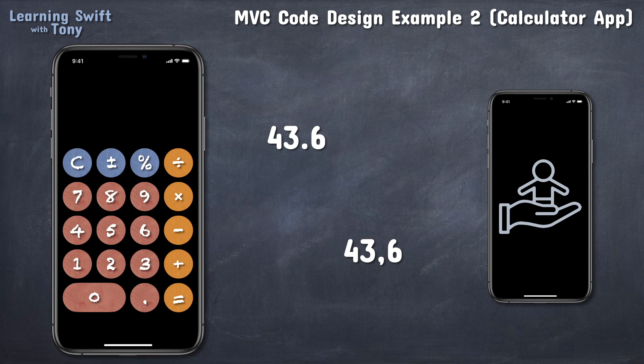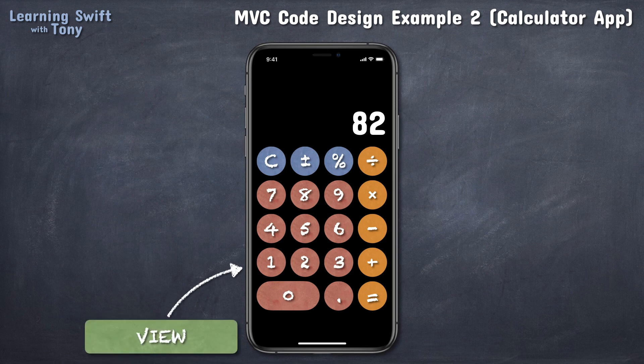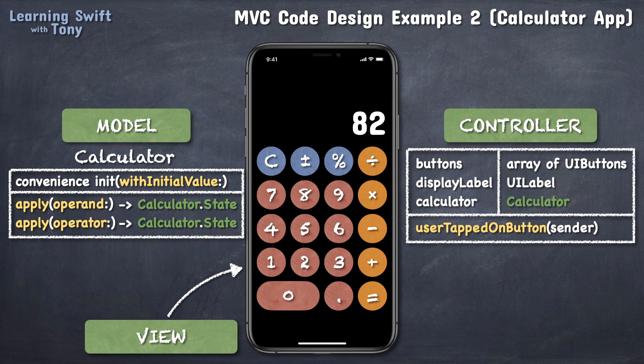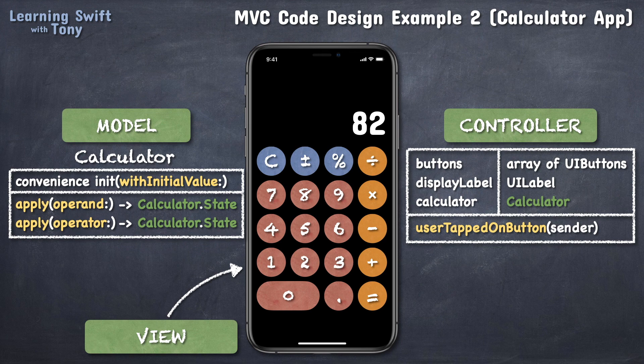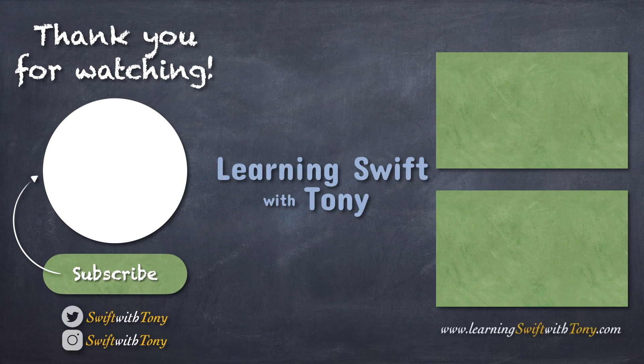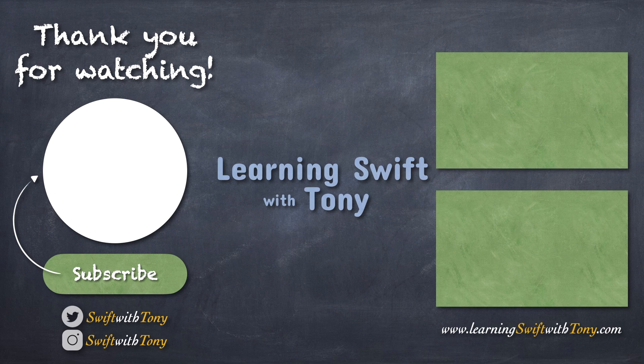So here we are. We got our view, which is made of a bunch of buttons and a label. We got our model, made of a calculator object with a convenience initializer and two functions. And we have our controller, which exchanges information between the model and the view. Each component has its own separate distinct role in the overall system. I hope you did find value in this video, and if you did, subscribe and turn on the notifications bell so you can stay informed about future videos.